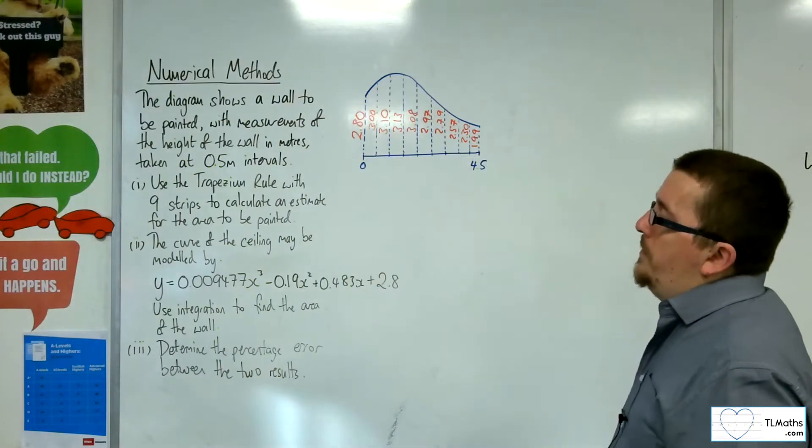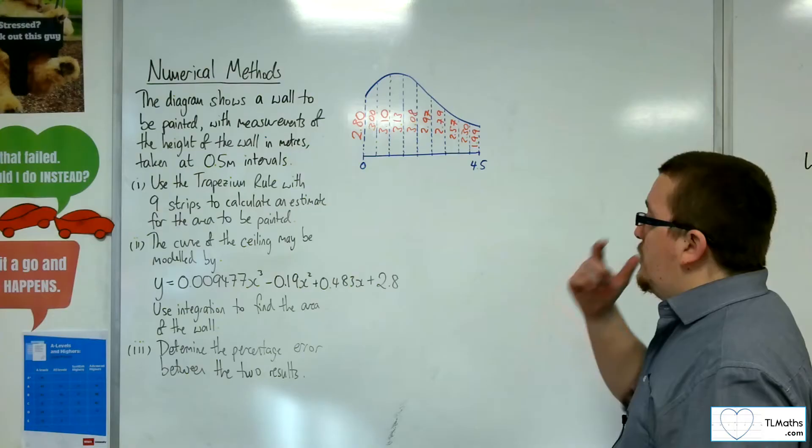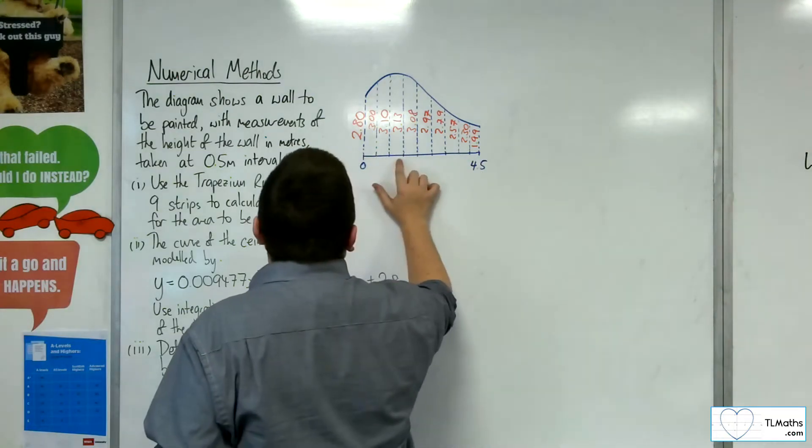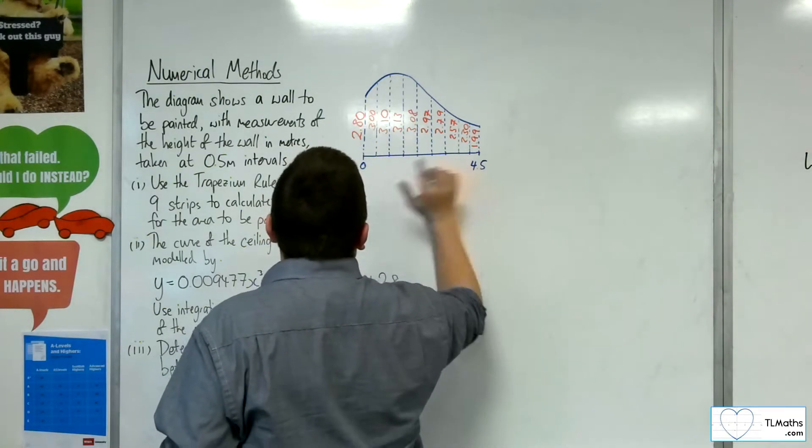Use the trapezium rule with 9 strips to calculate an estimate for the area to be painted. So we've got 1, 2, 3, 4, 5, 6, 7, 8, 9 strips.